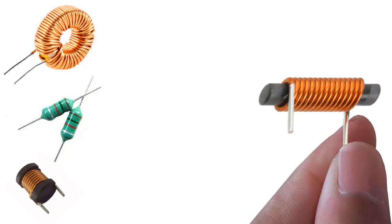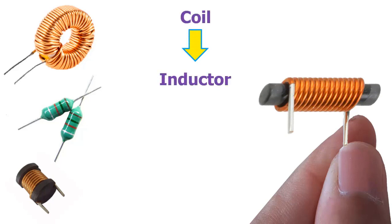Hello friends. In this lesson, I will explain the structure and working principle of coils, which is one of the basic circuit devices of electricity and electronics. A coil is also called an inductor. The unit of the coil is Henry and is denoted by the letter L.